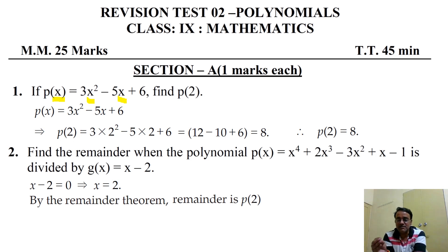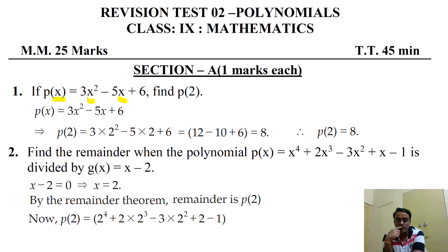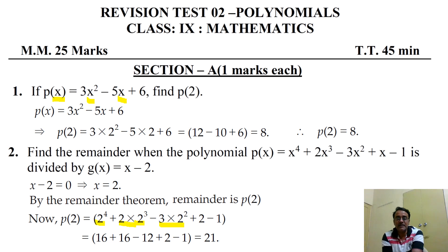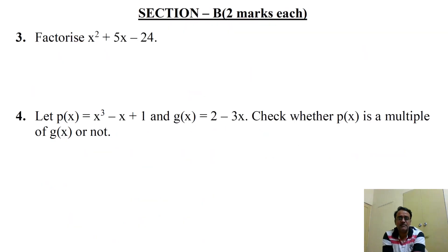Just substitute x = 2 in the given polynomial. The first term gives 16, the next also 16, then -12, +2, -1. The final answer is 21. So 21 is the required remainder.